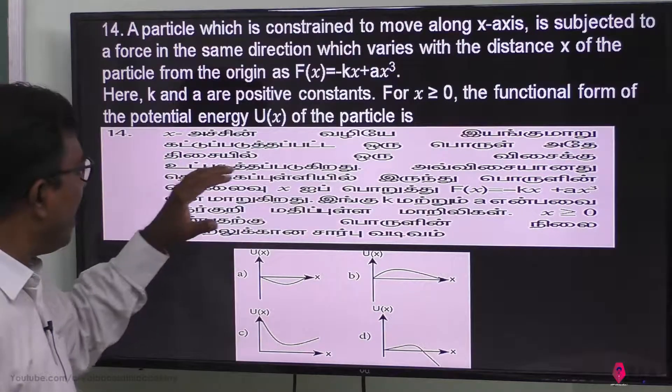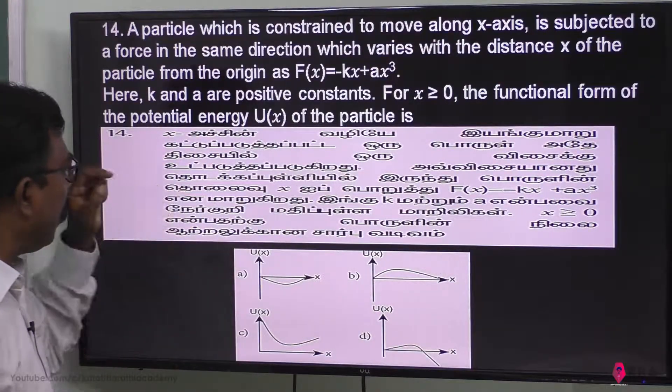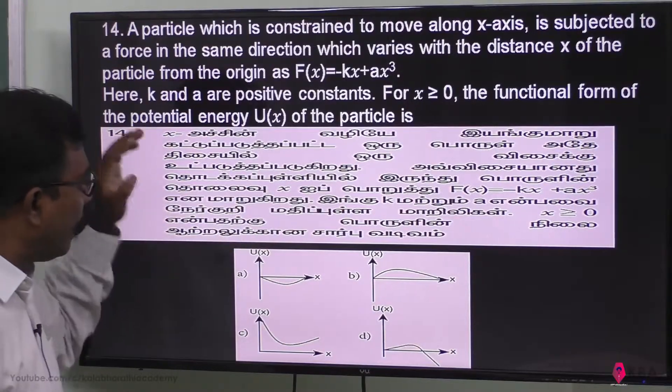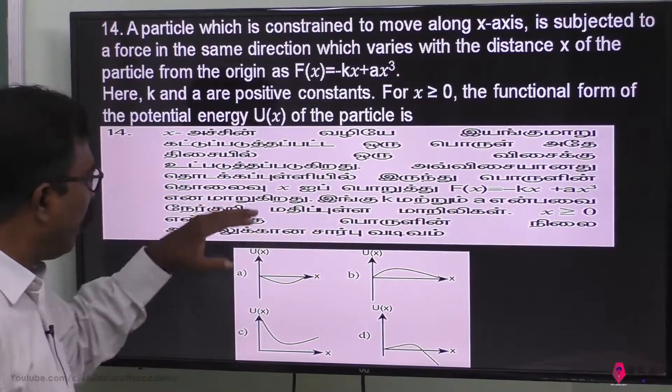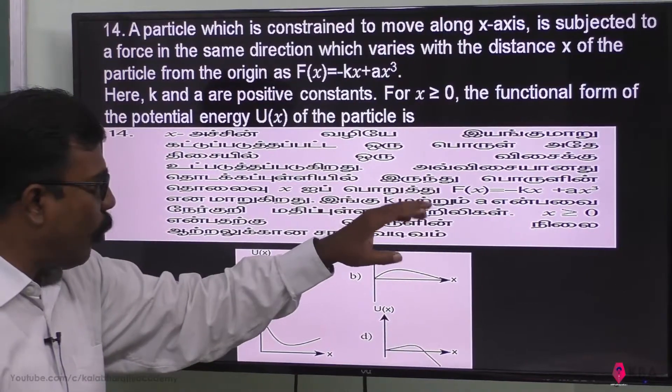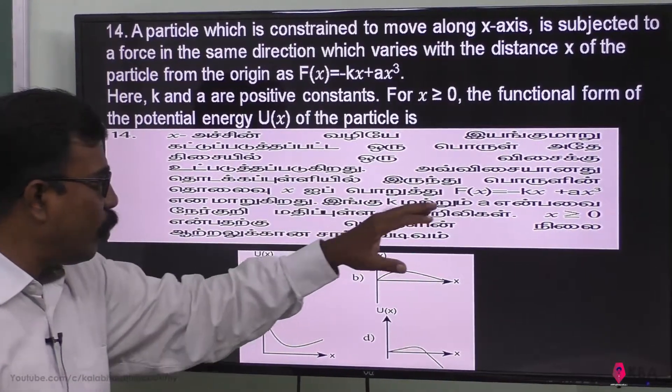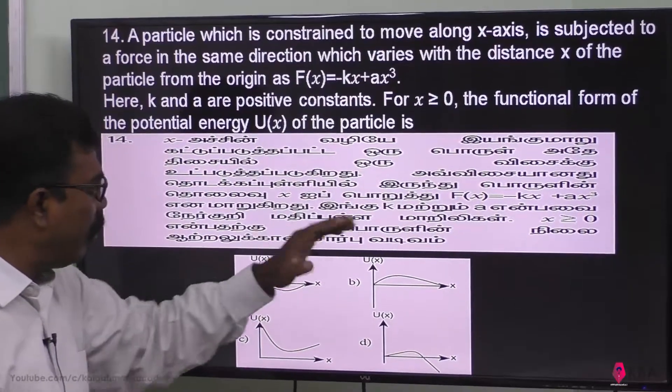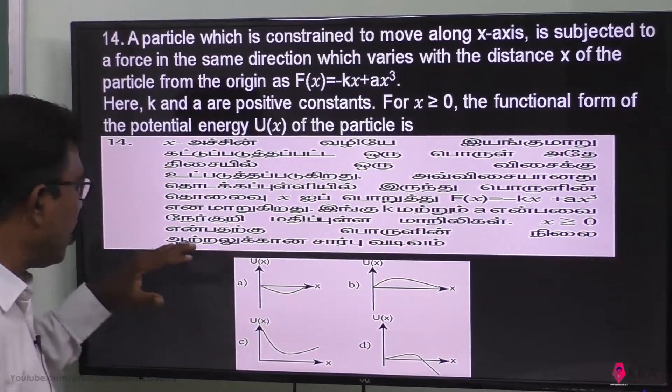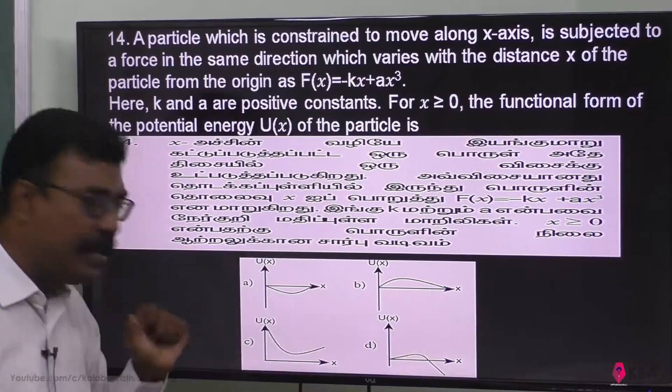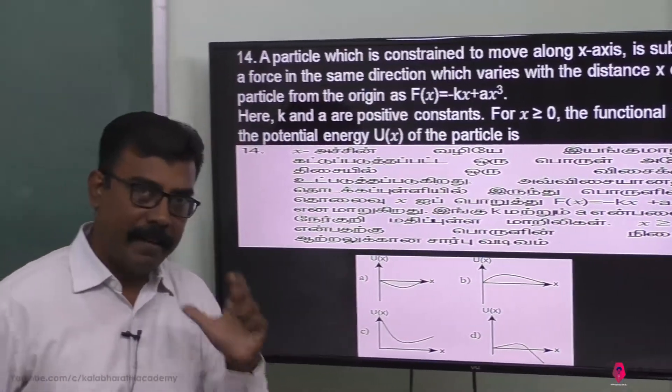The problem states that a particle constrained to the x-axis is subjected to a force that varies with distance from origin as F(x) = -kx + ax³, where k and a are positive constant values. For x greater than 0, which of these four options represents the functional form of the potential energy?